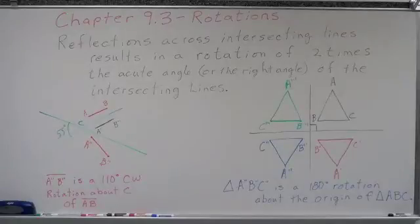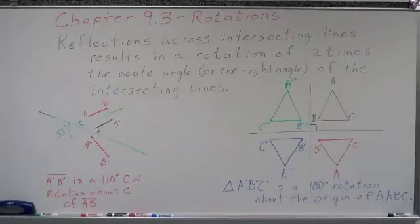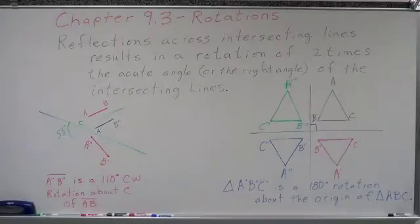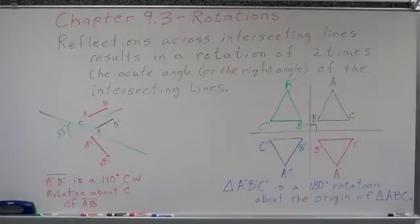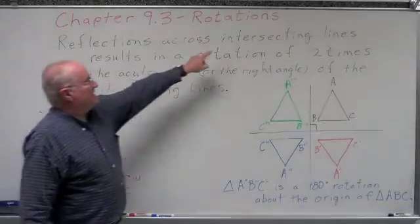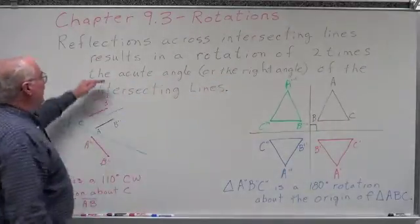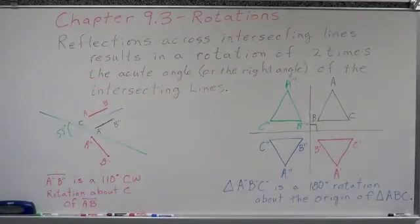Now we're going to talk about a different way to accomplish a rotation using reflections. If you remember when we were looking at translations, we did a translation by using a composition transformation of two reflections across parallel lines. What you're finding out is reflections mimic some of the other transformations. Reflections across intersecting lines results in a rotation of two times the acute angle, or the right angle, of the intersecting lines.